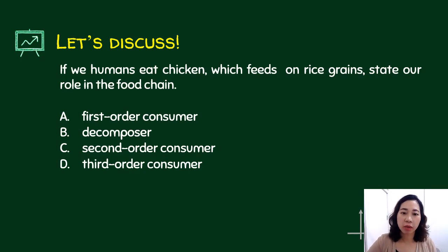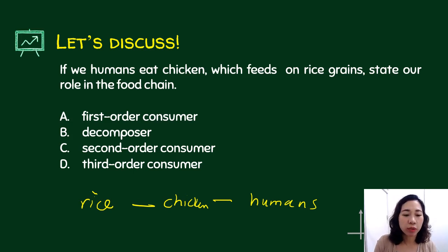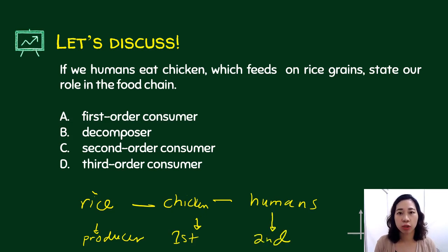If we humans eat chicken, which feeds on rice grains, state our role in the food chain. The food chain is: rice grains → chicken → humans. Rice would be your producer. Chicken and humans are consumers, but chicken is the first-order consumer and humans are the second-order consumer. Hence the answer is letter C.